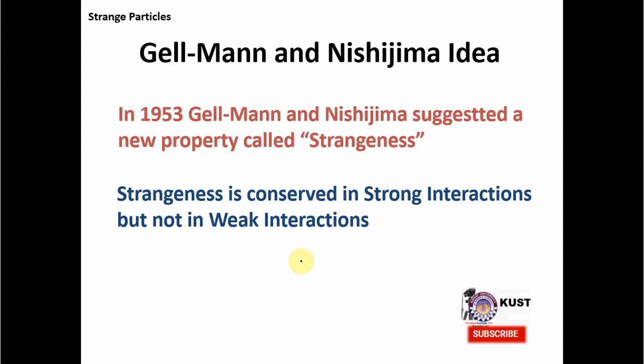Strangeness is conserved in strong interactions but not in weak interactions. Gell-Mann and Nishijima quantified this strangeness and gave it a quantum number which can measure the strangeness of a particle. So now we know that these strange heavy baryons are strange because there were so many of them, and also because strangeness is conserved in strong interactions but not in weak interactions — so the decay mechanism and the production mechanism are completely different.